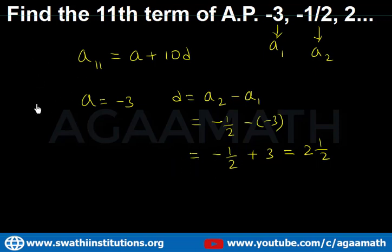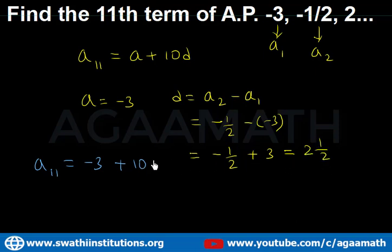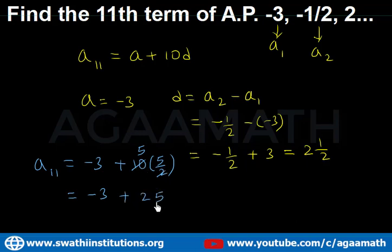Now substituting: a11 = a + 10d = minus 3 + 10 times (5/2) = minus 3 + 25 = 22. So the 11th term of the AP is 22.